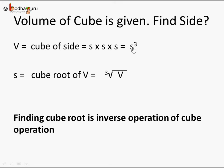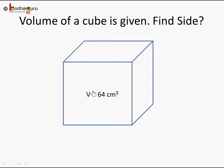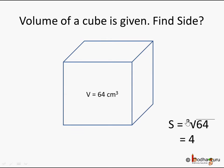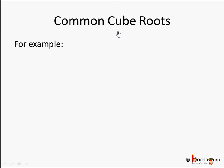In this particular example, given volume of 64 centimeter cube, to find its side we do cube root of 64, which is 4. That is, 4 cubed is 64, or cube root of 64 is 4. So the side is 4 centimeters each.